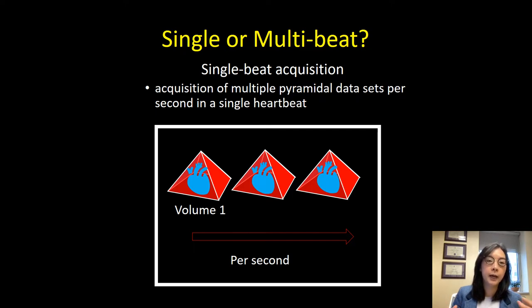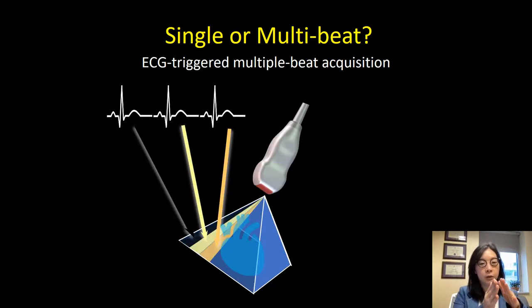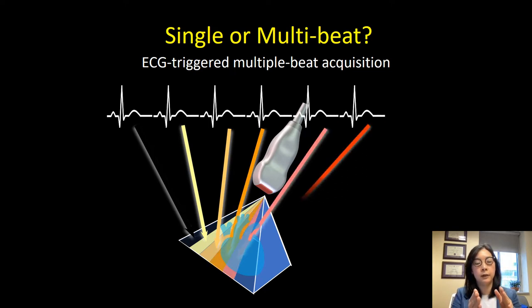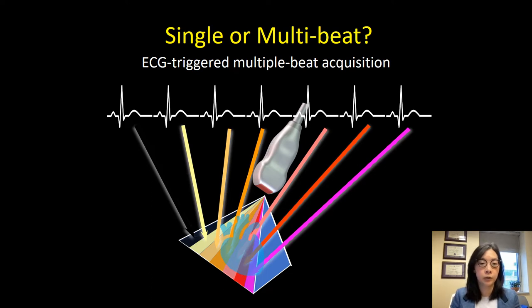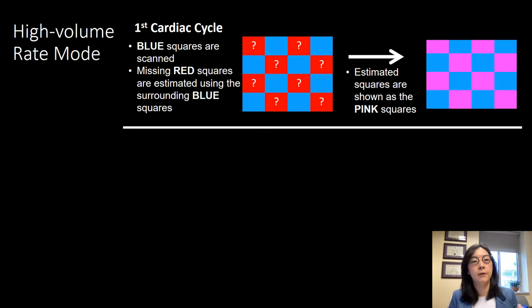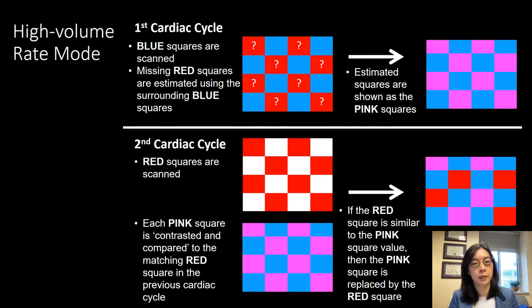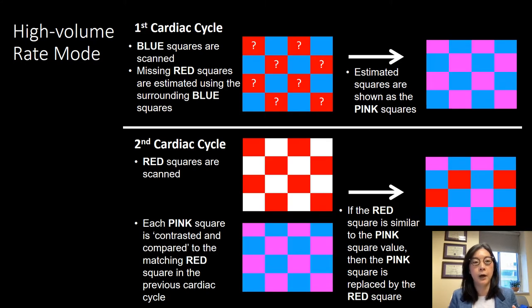What is single beat acquisition? Single beat acquisition is the acquisition of multiple pyramidal data sets covering your structure of interest per second in a single heartbeat. In multi-beat acquisition you cover several small sub-pyramids that only cover a portion of your structure and then fuse them all to create a larger image showing the entire structure. With high volume rate mode, an interpolation algorithm is used — not all probe elements are active and scanning simultaneously. The blocks not being scanned are filled in by interpolation or a guess, and in the second cardiac cycle it tries to fill in real data, which is why those images are not as nice as multi-beat acquisition.